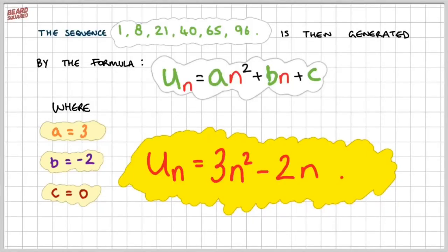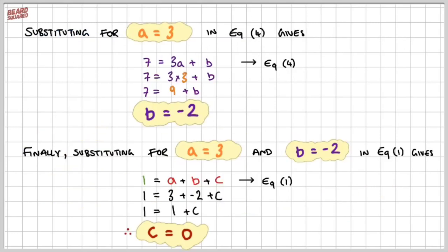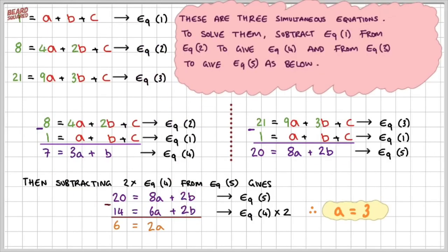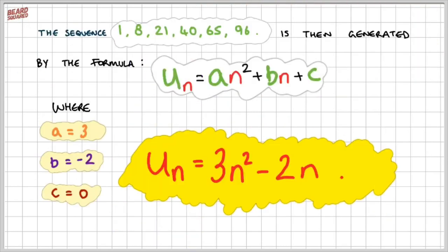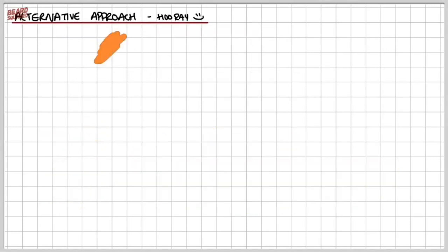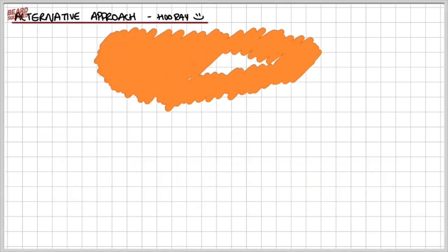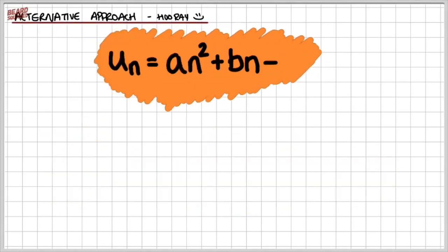Okay, so if you remember, this was part one where we solved this sequence using simultaneous equations. We set up a set of simultaneous equations like these ones here, and then we solved these. Now, we're going to be establishing the fact that the formula for a quadratic sequence is un equals an squared plus bn plus c.